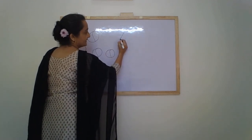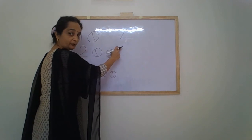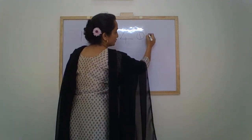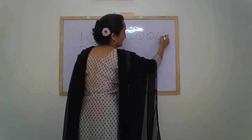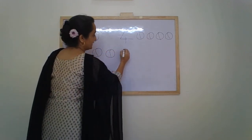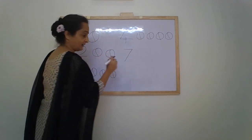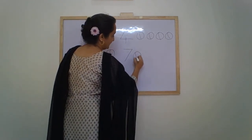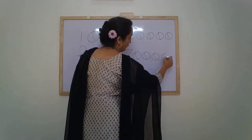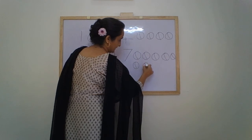Slanting line, sleeping line, standing line — number 4. 1, 2, 3, 4. Number 7: sleeping line, slanting line — number 7. 1, 2, 3, 4, 5, 6, 7.